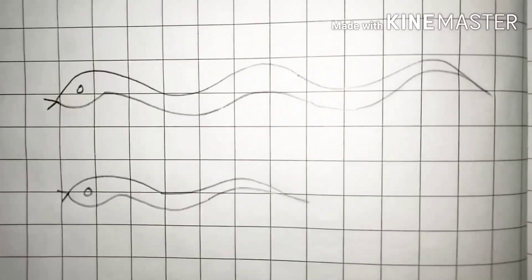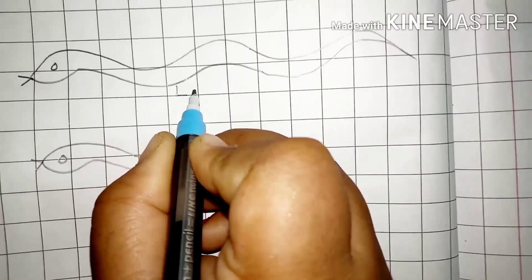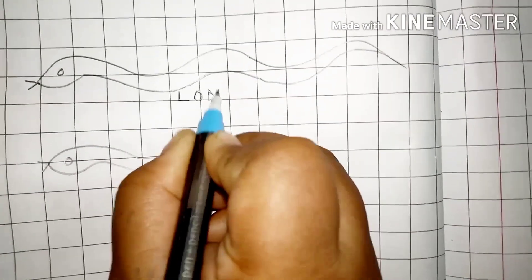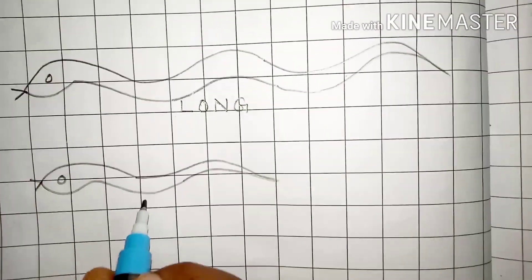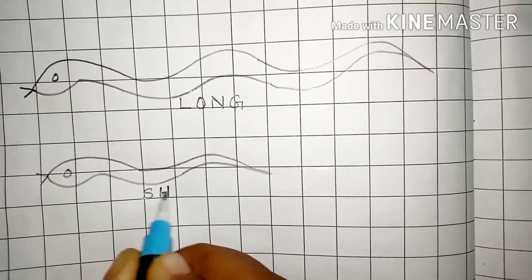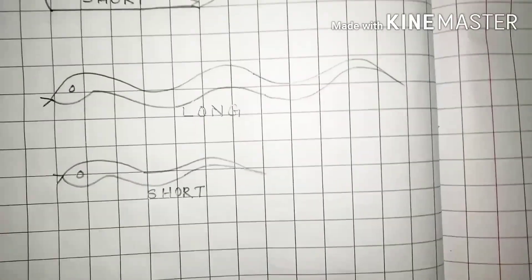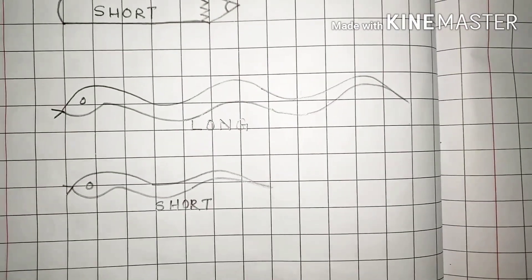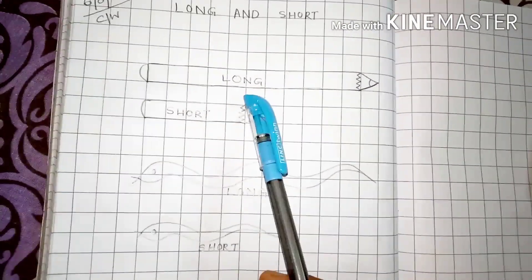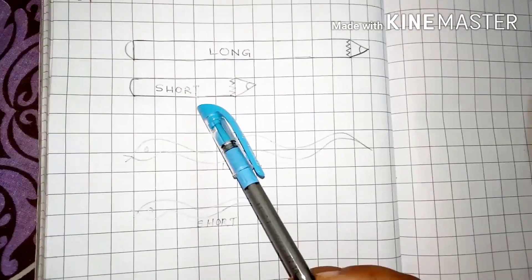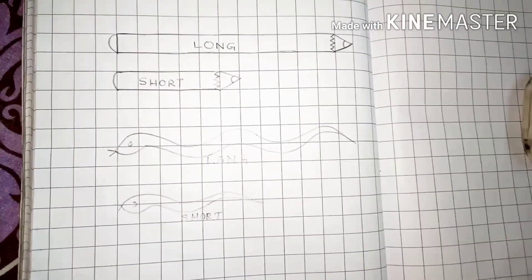Can you see children? This is again a long snake. So, you write here LONG. And then, write here SHORT. This is a long pencil and this is a short one. This is a long snake and a short snake.